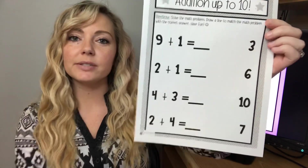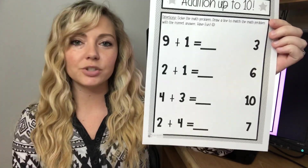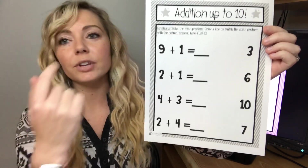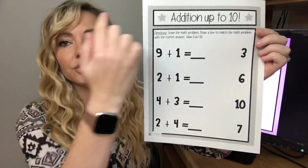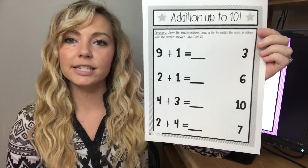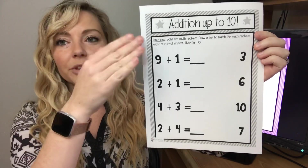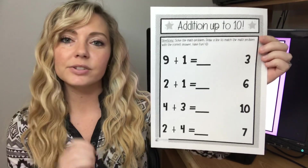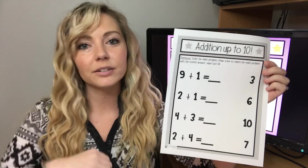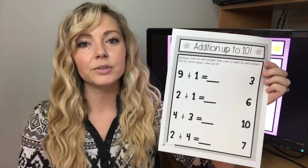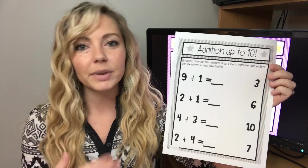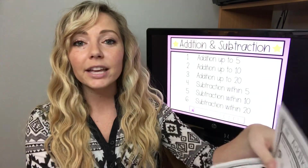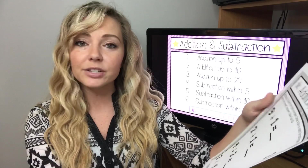My students really enjoy doing matching worksheets on the smart board. Through Easel, you can have students draw a line to the correct answer — one student completes the first one, another student completes the second. It gets your students up and moving out of their chairs to go up to the smart board. You can also mix and match any of these and create a packet or make this a center.